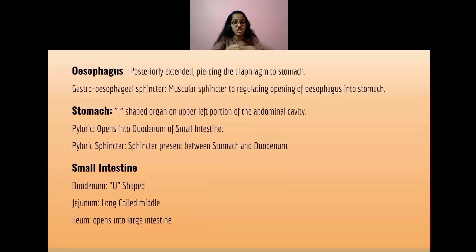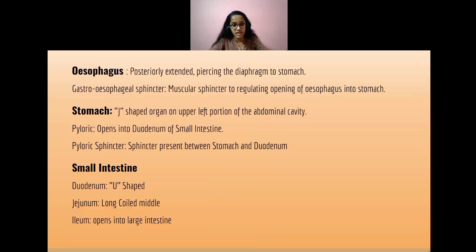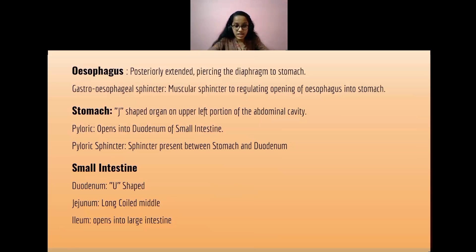The esophagus is posteriorly extended, piercing the diaphragm to reach the stomach. The gastroesophageal sphincter is a muscular sphincter that regulates the opening of the esophagus into the stomach. The stomach is a J-shaped organ located in the upper left portion of the abdominal cavity. The pyloric sphincter is present between the stomach and the duodenum.